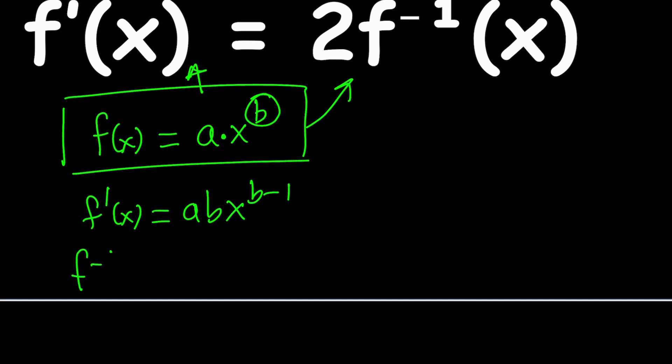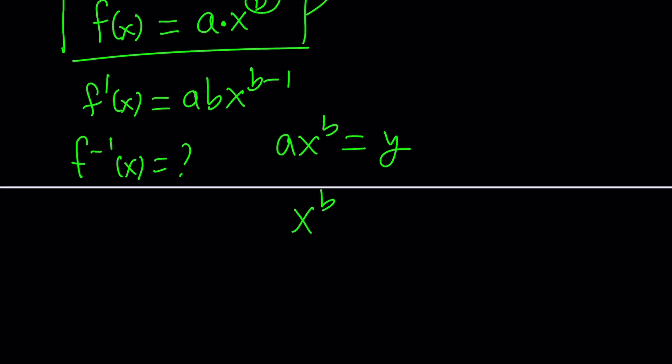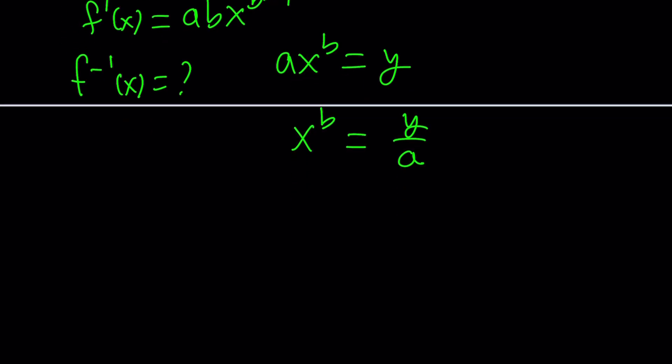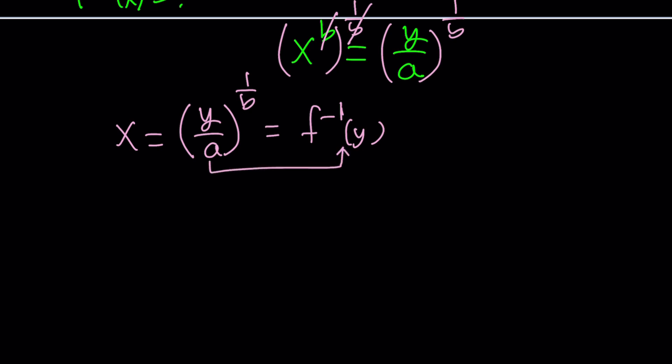What about f inverse? To find f inverse, we're going to set this equal to y, and then we're going to try to isolate x from here. Set this equal to y, divide both sides by a, and then raise both sides to the power 1 over b. That should give you x. We're going to isolate x from here, which is going to be y over a to the power 1 over b. This is the same as f inverse of y. From here, we can write f inverse of x, just change the variable, it's going to be x over a to the power 1 over b.